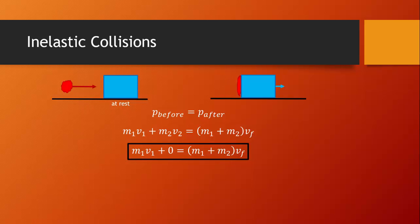Now let's make up some numbers. Let's say the blob of clay is 1.2 kg moving at 16 meters per second, colliding with the block that is at rest and has a mass of 9 kg. Afterward, the combined object has a mass of 1.2 kg plus 9 kg, and we want to figure out how fast it's moving. We plug all those numbers into the equation, and we'll see that we have only one variable to solve for.